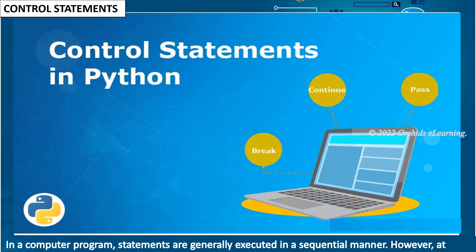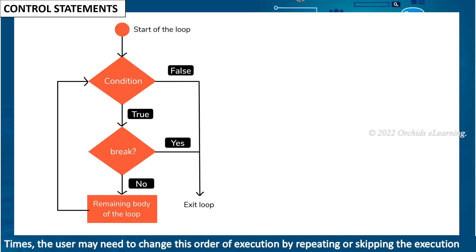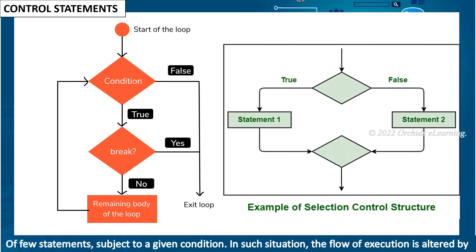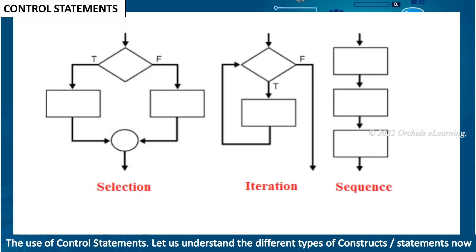In a computer program, statements are generally executed in a sequential manner. However, at times the user may need to change this order of execution by repeating or skipping the execution of a few statements subject to a given condition. In such situations, the flow of execution is altered by the use of control statements. Let us understand the different types of constructs or statements.